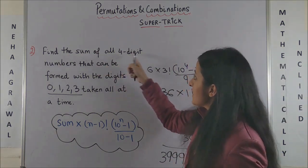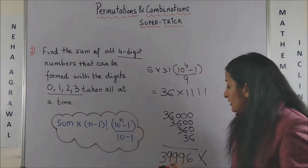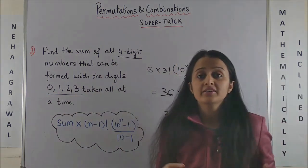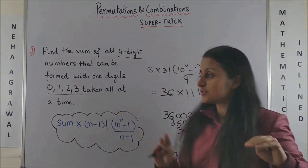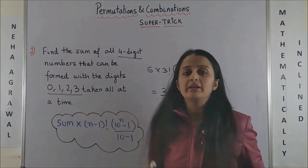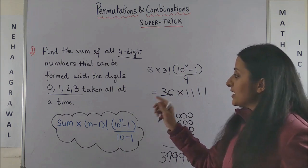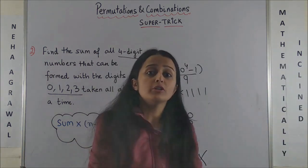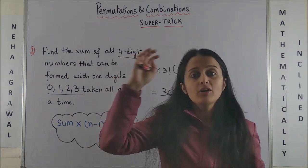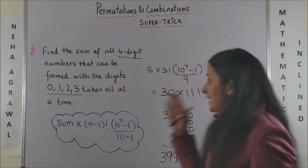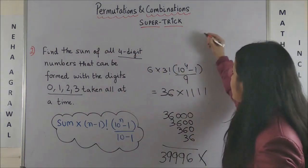Is this the answer? No, this is just part of the answer. Once again, look at the question. It says sum of all four-digit numbers. Now this 39,996 also includes those numbers when 0 would have been taken at the thousands place. So what do you do? From here you have to subtract the sum of all those numbers where you took 0 at the thousands place.